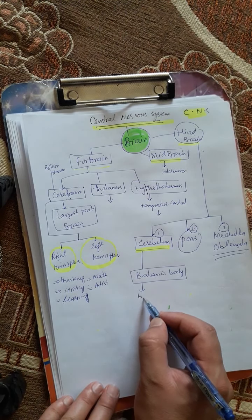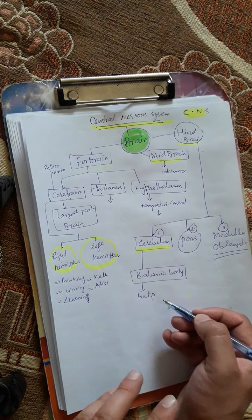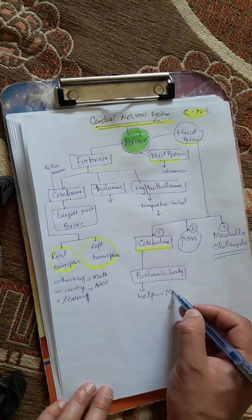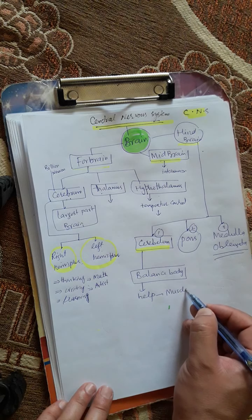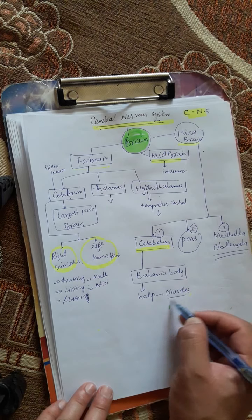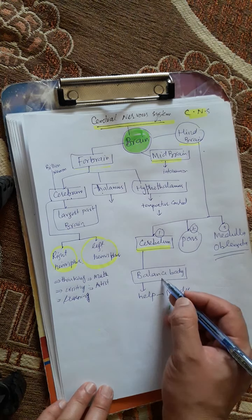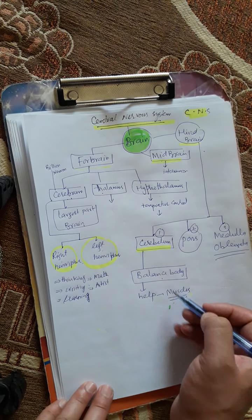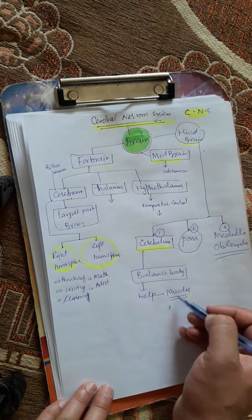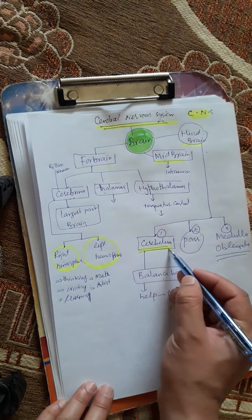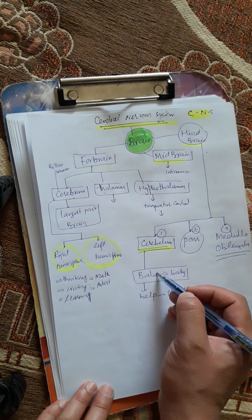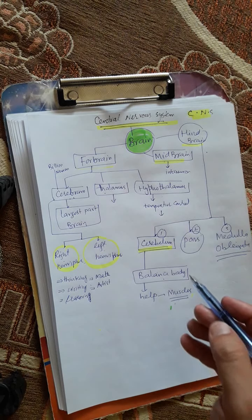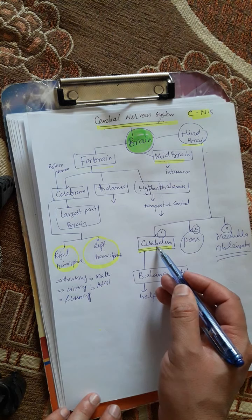The balance in the body is maintained with the help of muscles and bones. All the muscles provide balance. The coordination between muscles and bones is managed by the cerebellum. The cerebellum keeps the body in balance. If the cerebellum stops working, then the body will become unbalanced.